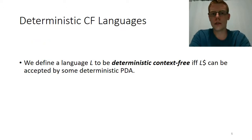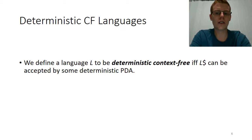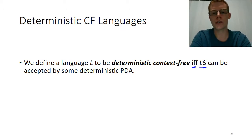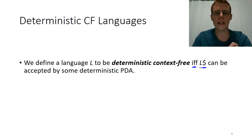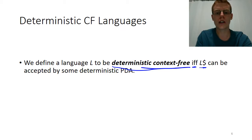With those facts, we can define a language to be a deterministic context-free language if and only if L$ can be accepted by a deterministic pushdown automata. Basically, can we build a pushdown automata that has no choices along its path — so it operates deterministically — that accepts the language if we allow the machine to know when the end of the string is? If that's the case, then we have a deterministic context-free language.